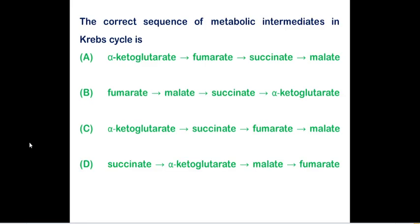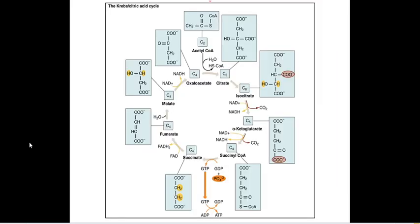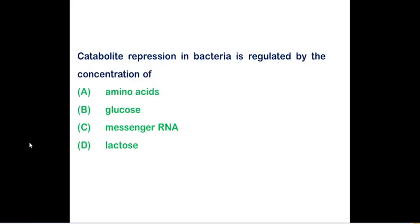The correct sequence of metabolic intermediates in the Krebs cycle: option C is correct — alpha-ketoglutarate, succinate, fumarate, malate. This is a repeated question you can find in CSIR examinations also. The full sequence is: acetyl-CoA, oxaloacetate, citrate, isocitrate, alpha-ketoglutarate, succinyl-CoA, succinate, fumarate, malate. So option C is correct.